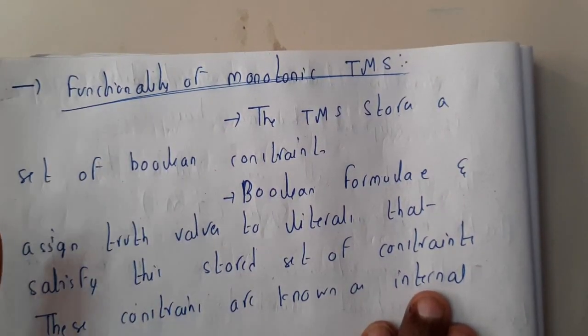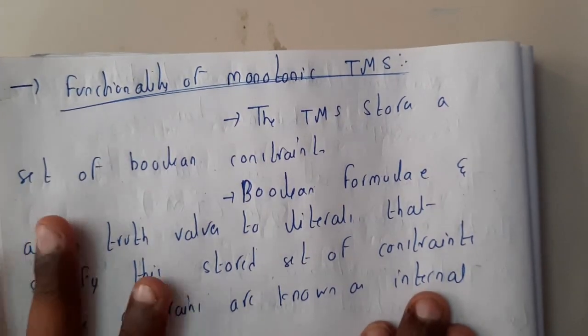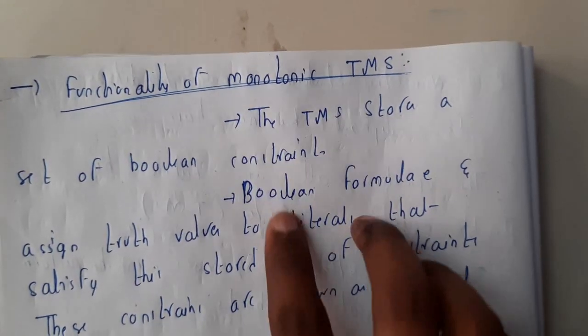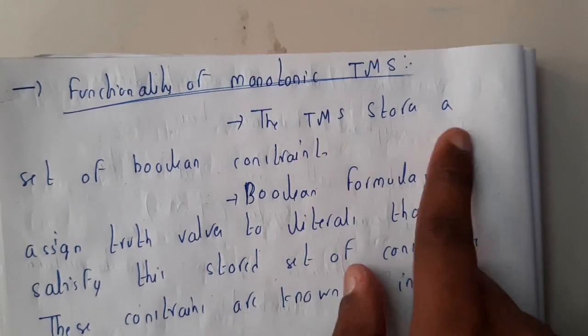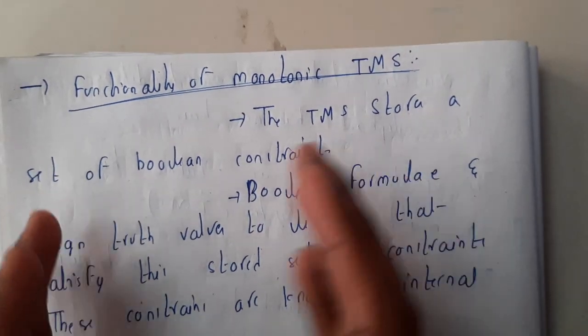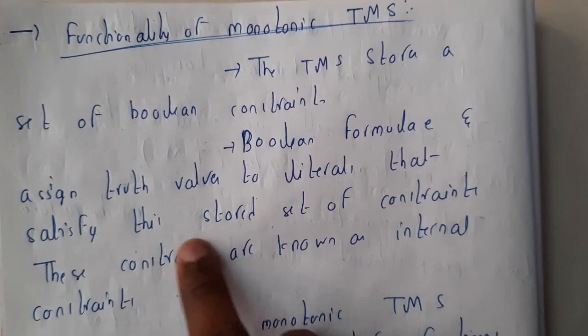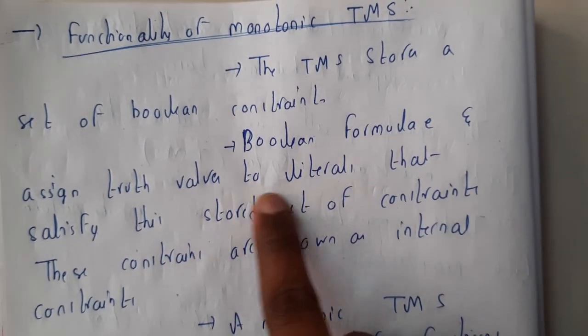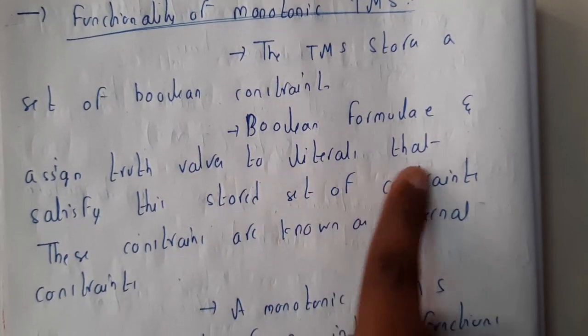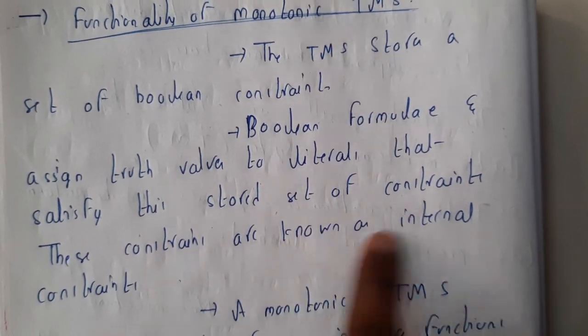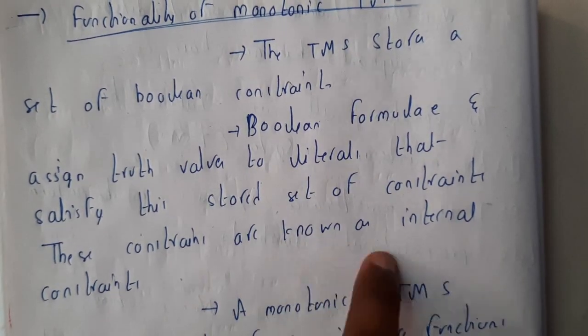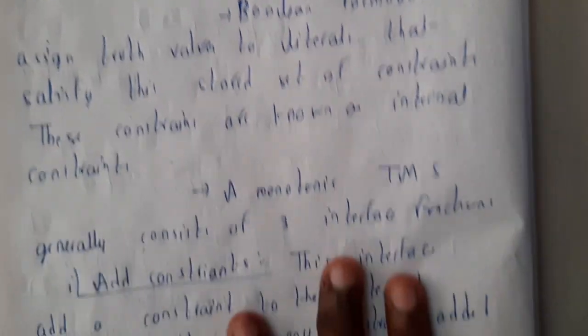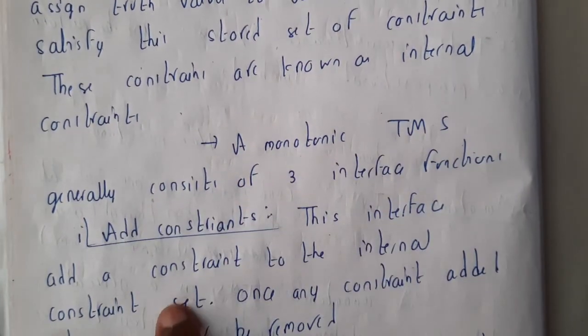In monotonic, I'll be just going through these things because I'm not so good at these topics, so I'll be just giving you a small introduction. The TMS stores a set of boolean constants or formulae and assigns truth values to the literals that satisfy the stored set of constraints. These constraints are called integral constraints. The monotonic TMS generally consists of three interfaces.